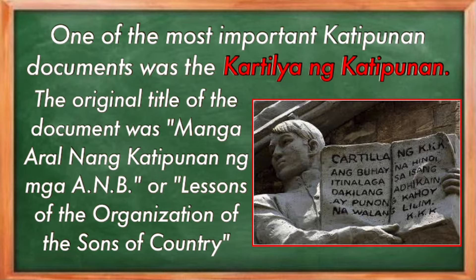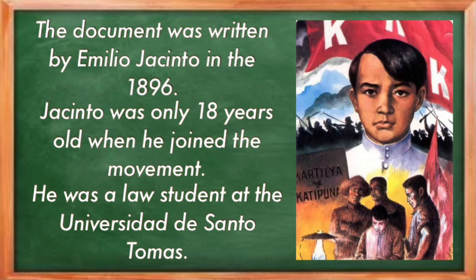One of the most important Katipunan documents was the Kartilya ng Katipunan. The original title of the document was Mga Aral ng Katipunan ng Mga Anak ng Bayan, or Lessons of the Organization of the Sons of the Country. The document was written by Emilio Jacinto in 1896. Jacinto was only 18 years old when he joined the movement and was a law student at the Universidad de Santo Tomas. Despite his youth, Bonifacio recognized his intellect, and upon seeing that Jacinto's Kartilya was much better than the Decalogue he himself had written, he willingly favored that the Kartilya be distributed to their fellow Katipuneros. Jacinto became the secretary of the organization and took charge of the short-lived printing press of the Katipunan.